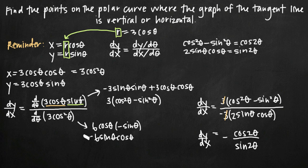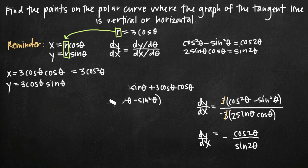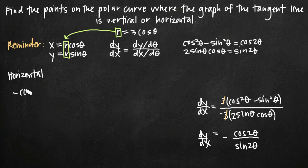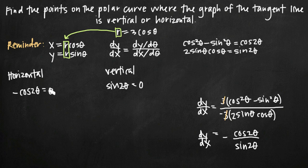We said that wherever the derivative equals zero we have horizontal tangent lines, and wherever it's undefined we have vertical tangent lines. For a rational function, we set the numerator equal to zero for horizontal tangents and the denominator equal to zero for vertical tangents. So we have horizontal tangent lines wherever negative cosine 2theta equals zero, and vertical tangent lines wherever sine 2theta equals zero. Dividing by negative one, cosine 2theta equals zero.